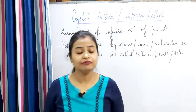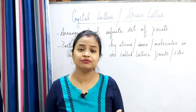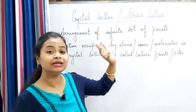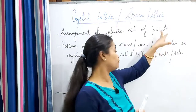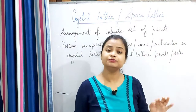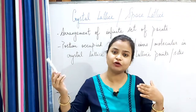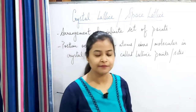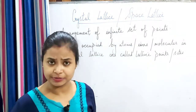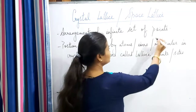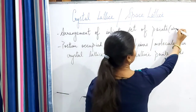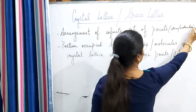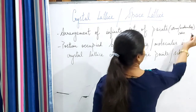So, if we want to define crystal lattice we can define it like this: arrangement of an infinite set of points is called a crystal lattice or space lattice. Now, what do points mean? Points are nothing but the constituent particles which can be atoms, molecules or ions.